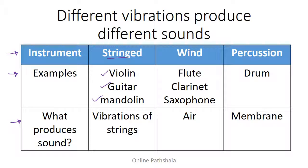The second type is wind instruments — examples include flute, clarinet, and saxophone. Sound is produced when air is blown into the pipes; it's the air that causes the vibrations and produces sound. The third type is percussion instruments, for example the drum. When you hit the membrane of the drum with a drumstick, the membrane vibrates and that is what produces sound.